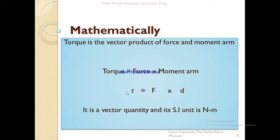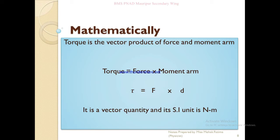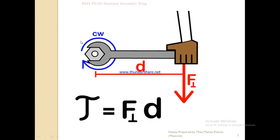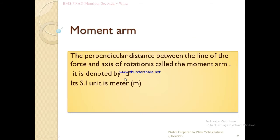We can say that torque is equal to the cross product of force and moment arm. The moment arm is the perpendicular distance between the line of action of the force and the axis of rotation, and it is denoted by d.